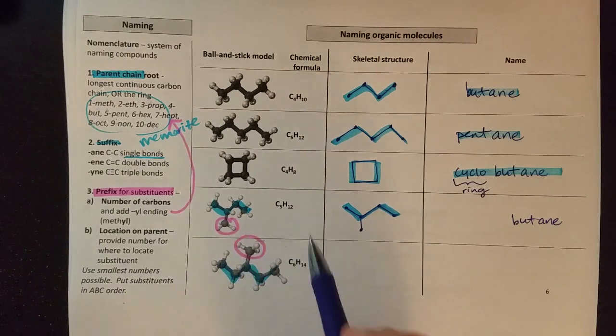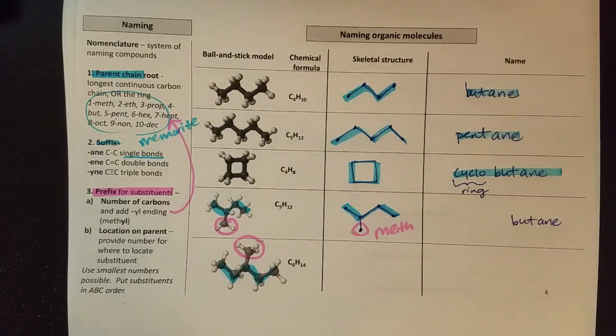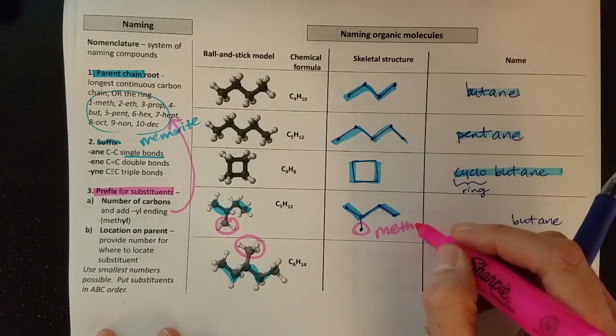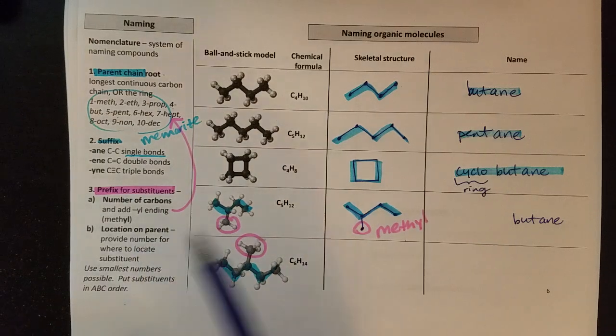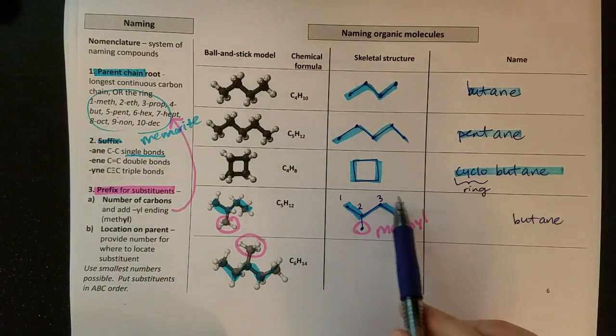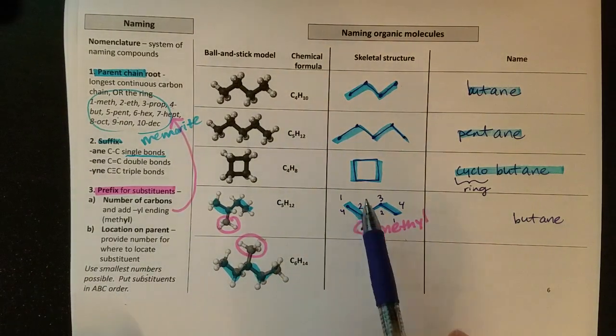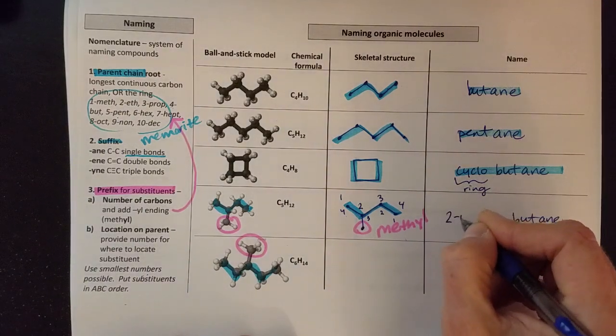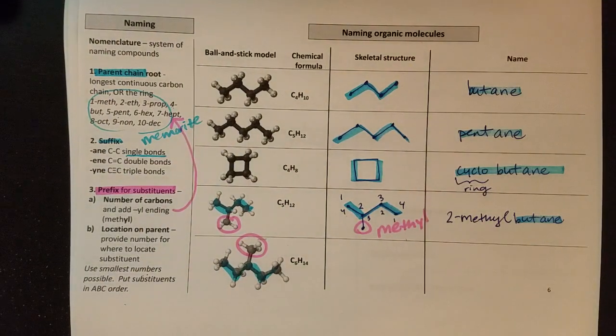Then I have to name my substituent. Looking at my substituent here, I notice that it has one carbon. One carbon means I'm going to use the prefix or root meth. One carbon, but because it's a substituent I want to add this yl, so this is going to be methyl. Then I need to say the location. I want to check my locations from left to right, which tends to be our default: one, two, three, four. Or if I counted from right to left: one, two, three, four. I always want the smallest numbers, so left to right gives me a two as a location. Right to left would give me a three. Two is better.